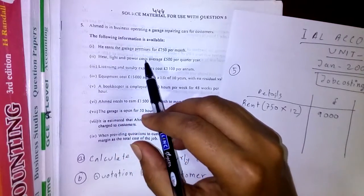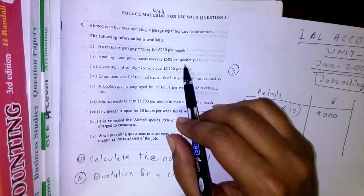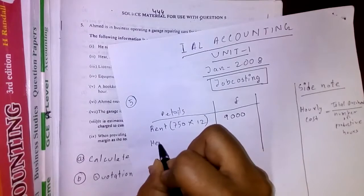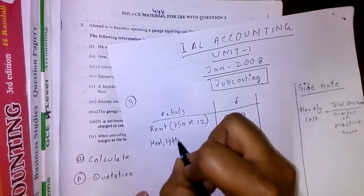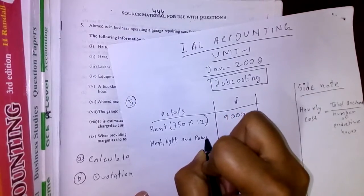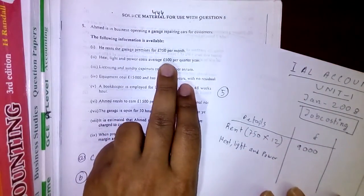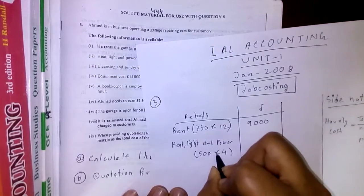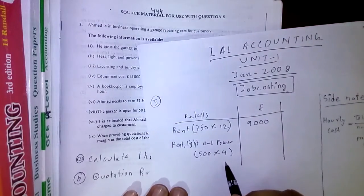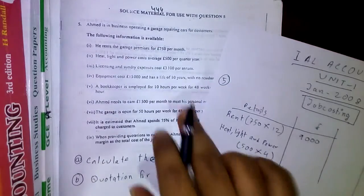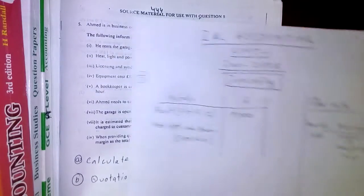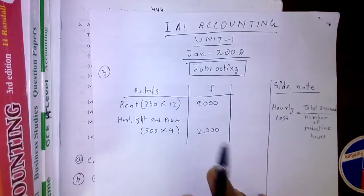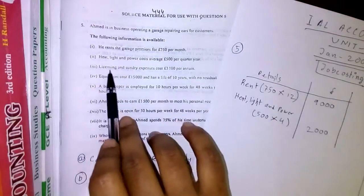Next, heat, light, and power costs average £500 per quarter — per quarter means three months. There are four quarters in a year, so 500 × 4 equals £2,000. So heat, light, and power total cost is £2,000.